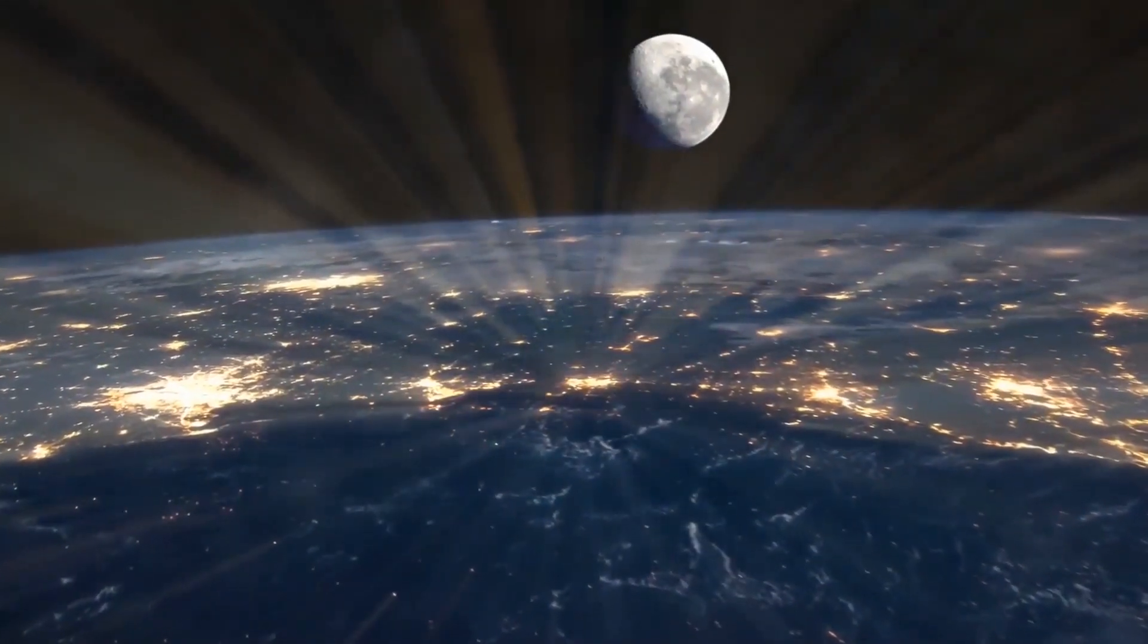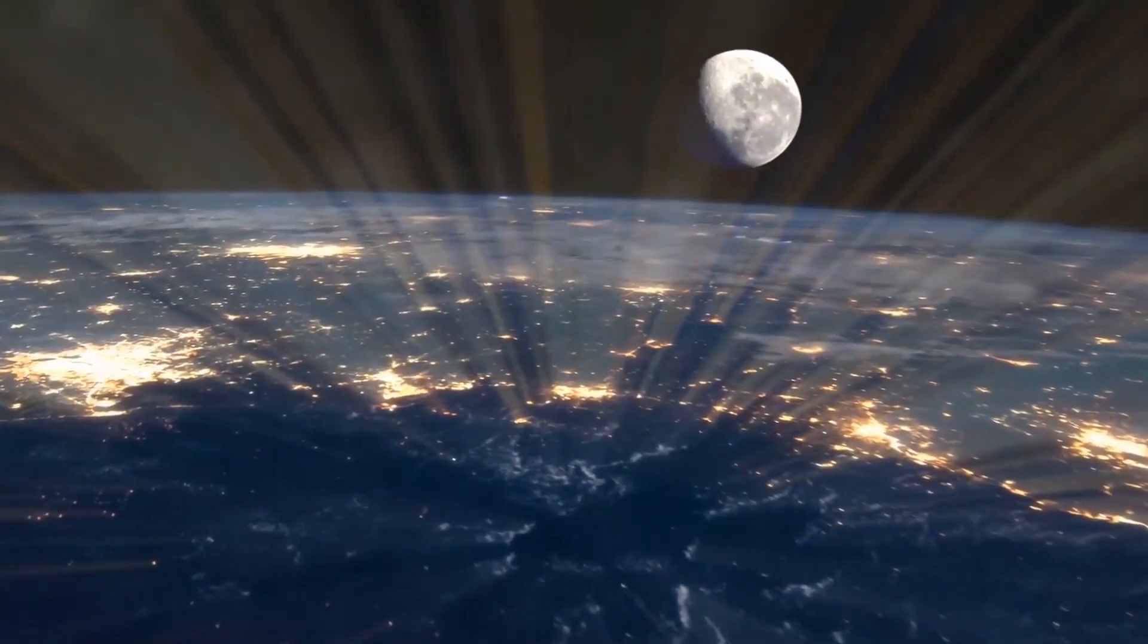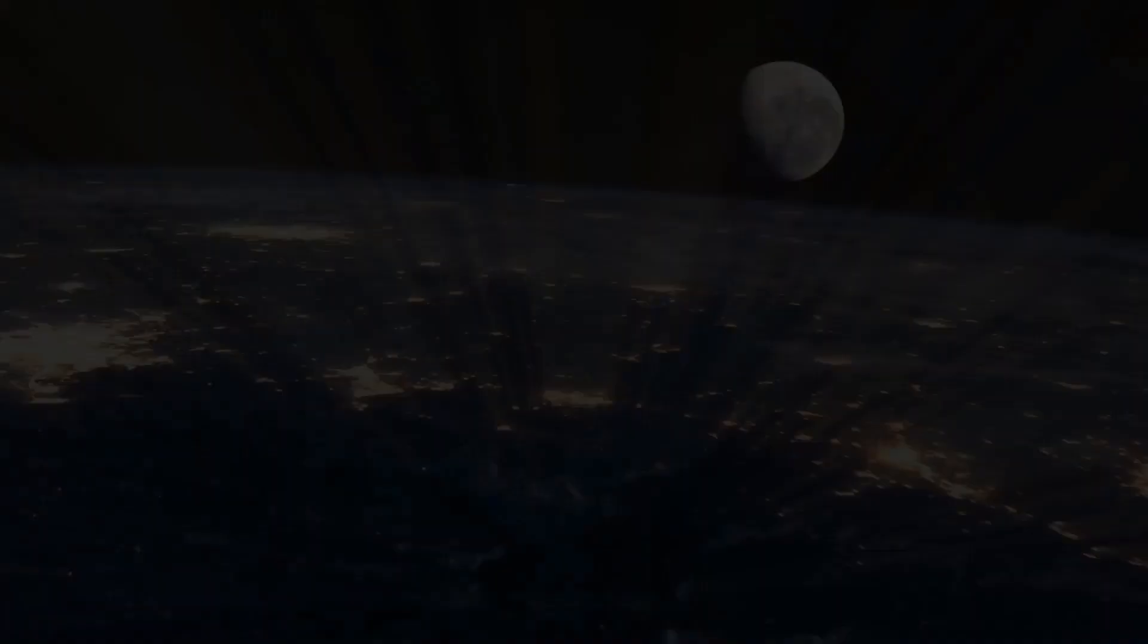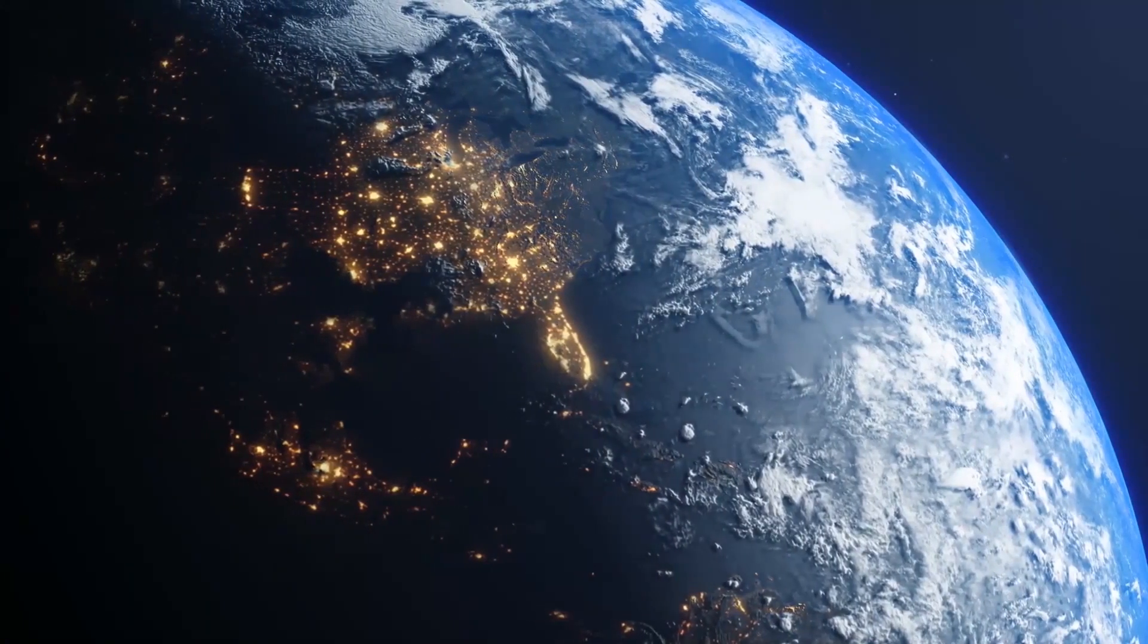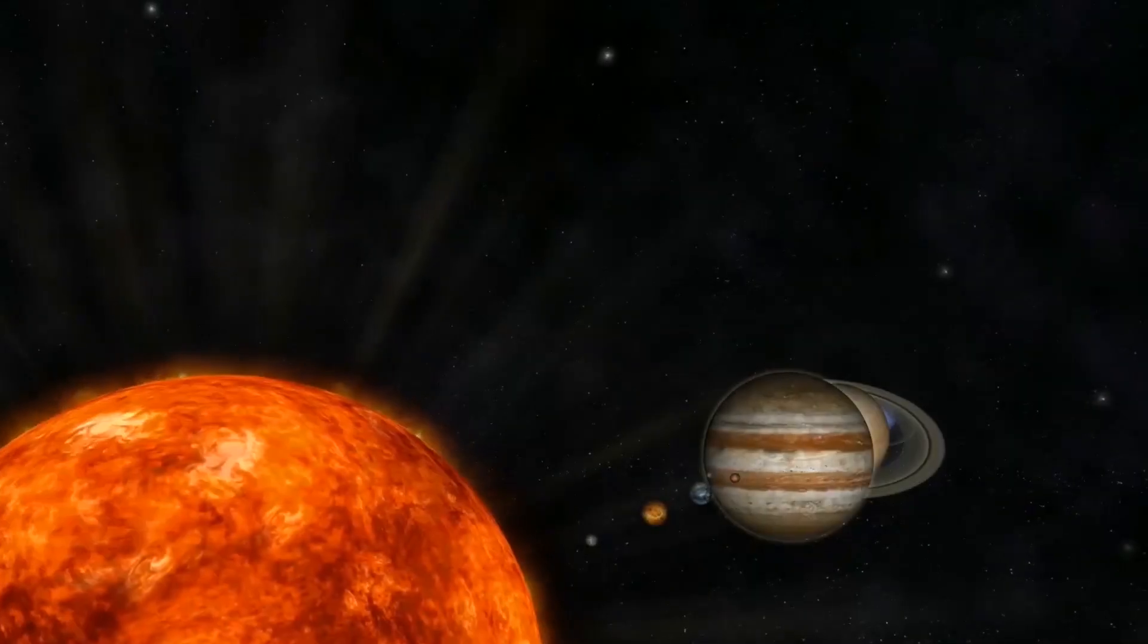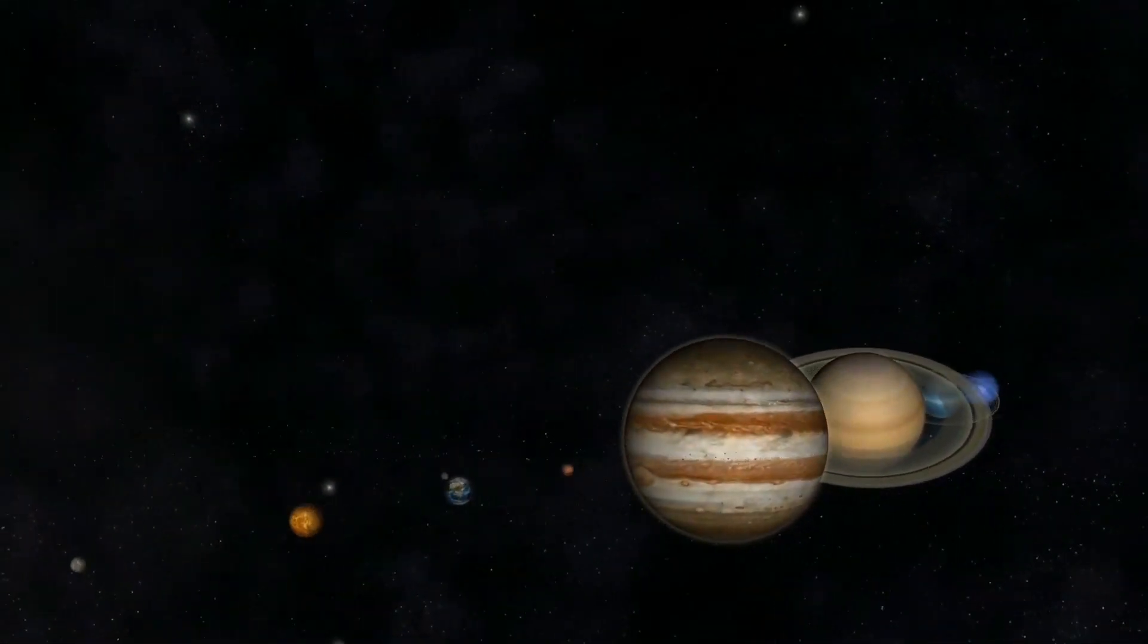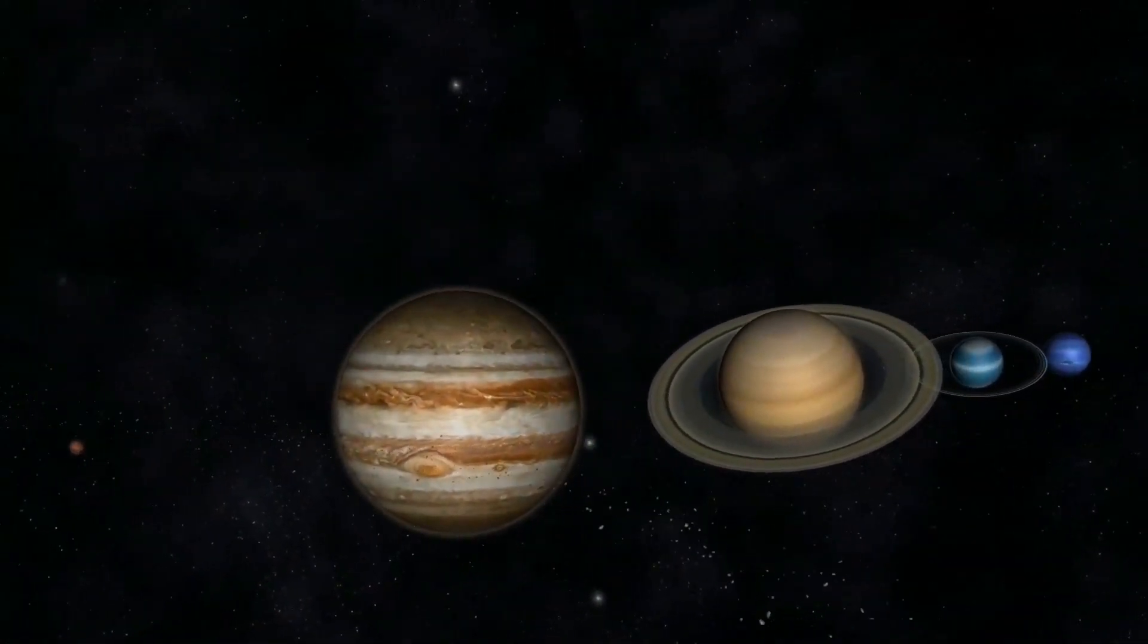When viewing the Earth from space, the most obvious sign that a civilization calls the planet home is the glow of lights from the night side of our planet. The massive cities which are visible from above emit light that is shed into the cosmos. The biggest problem we have had so far is the lack of technology to observe similar lights on planets outside our solar system.